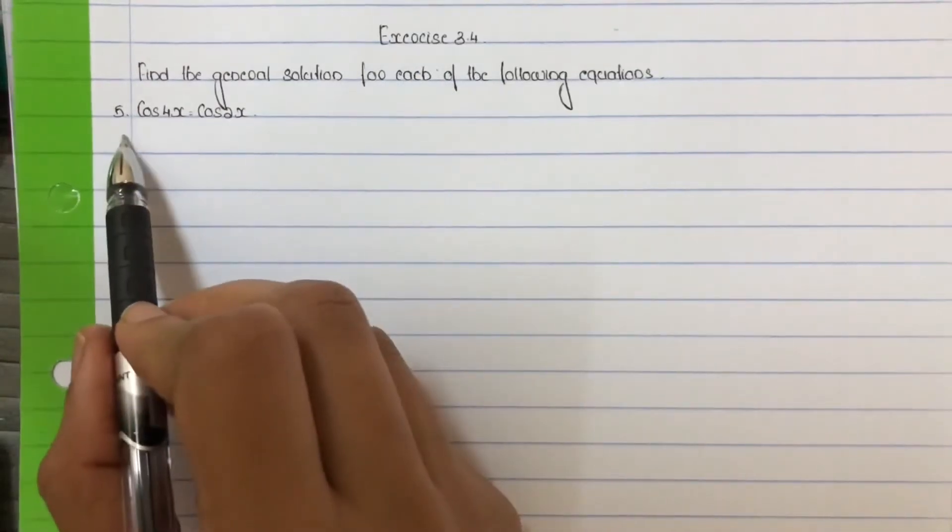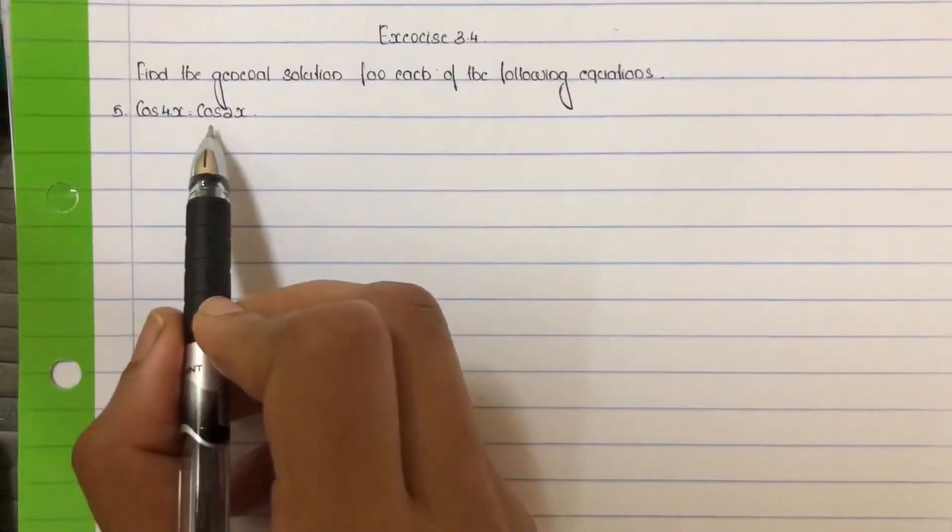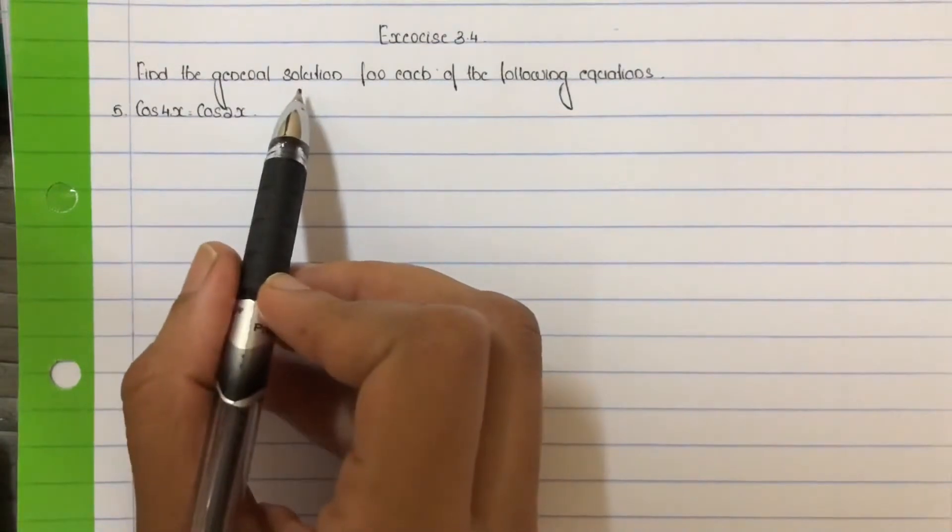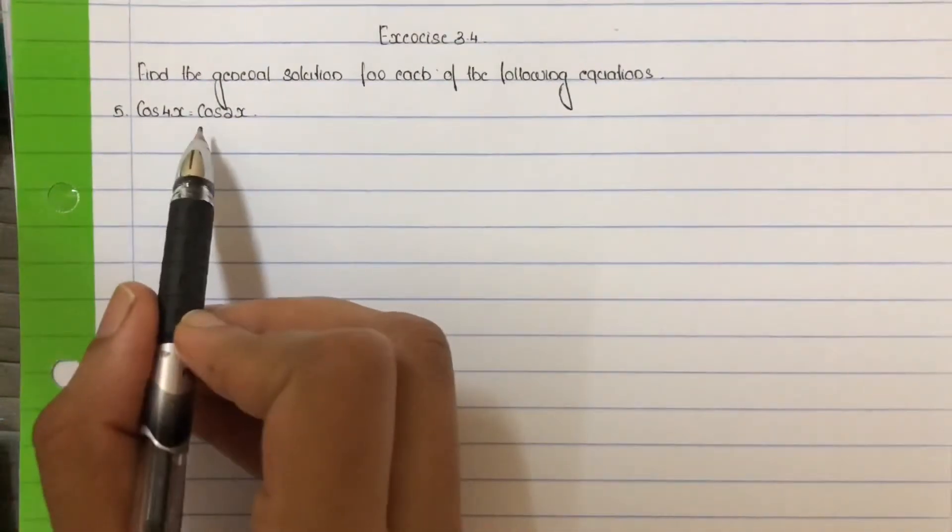Question number 5: cos 4x equal to cos 2x. The question asks to find out the general solution. We'll apply the formula directly.